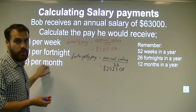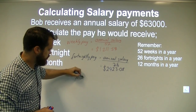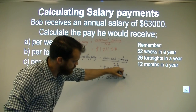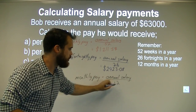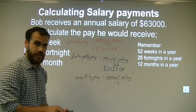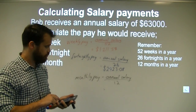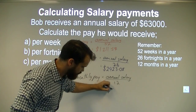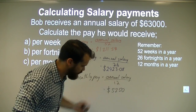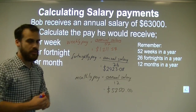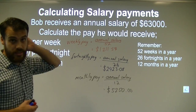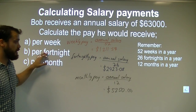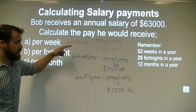You can do the monthly calculation yourself. This person's monthly pay is going to be equal to their annual salary divided by 12. We get a nice round number here — their monthly pay is $5,250 and no cents. So that's calculating salary payments: if you know someone's yearly payment, you can figure out their weekly, fortnightly, and monthly payment using these methods.